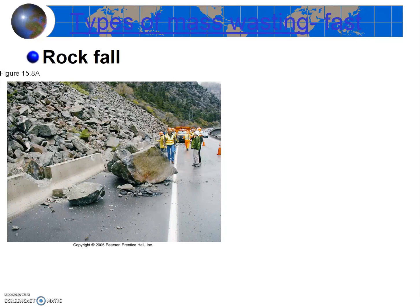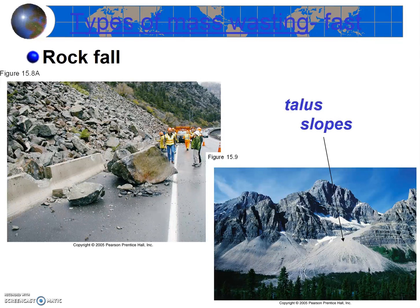Water? Over-steepening? Removal of vegetation? Earthquakes? I'm not exactly sure for this particular event, but you could probably argue any of those four. Check out this photo on the right — the rock falls here have created a big pile of talus called a talus cone or a talus slope. What might have loosened these rocks before they fell? Frost wedging perhaps?